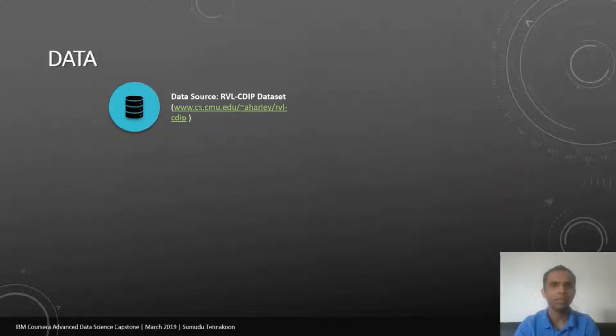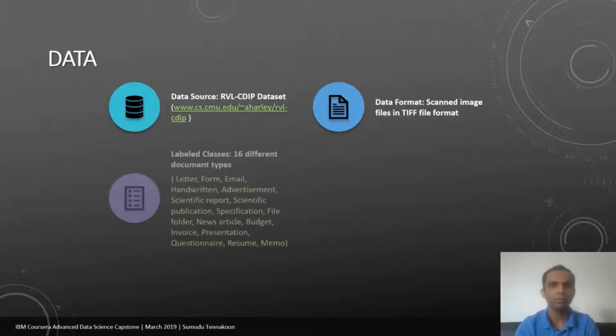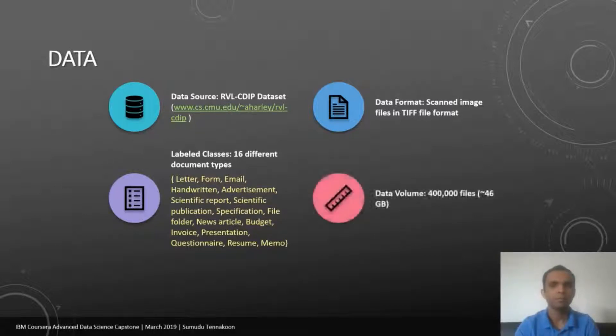Let's examine a little bit more detail on this dataset. Previously, we identified the data source and the data type of these files are TIFF file format. This dataset has 16 different document types images. You can see the list of them and then it has 400,000 files. After extracting, it is 46 gigabyte.